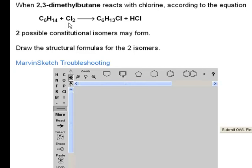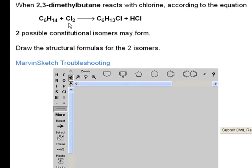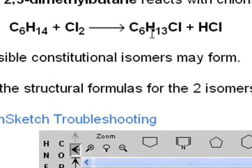Well, before we start drawing structures, let's just look at the chemical equation and understand what happened at a fundamental level. What happened is that a hydrogen on the alkane was substituted with one of the chlorines from the Cl2.